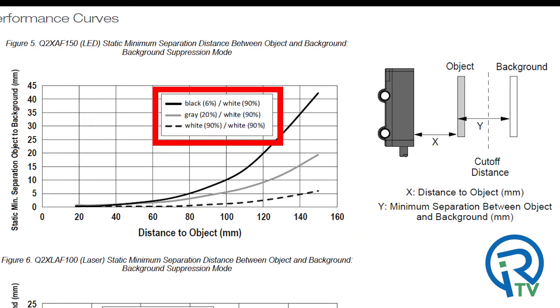For the Q2X series, banner shows three different reflective materials. Even though the sensor is looking for the angle of light being reflected back, there is still some difference in the amount of separation from object to background depending on the color reflectivity of the part.